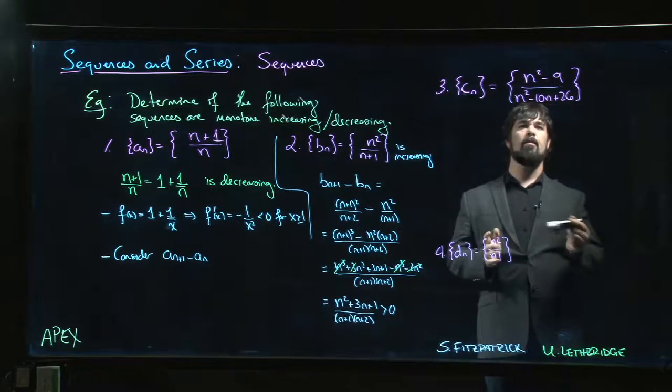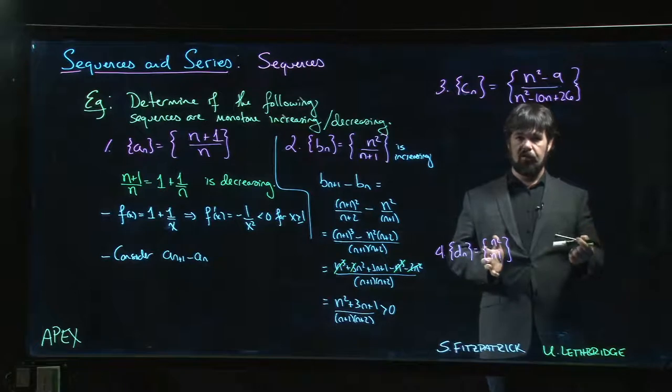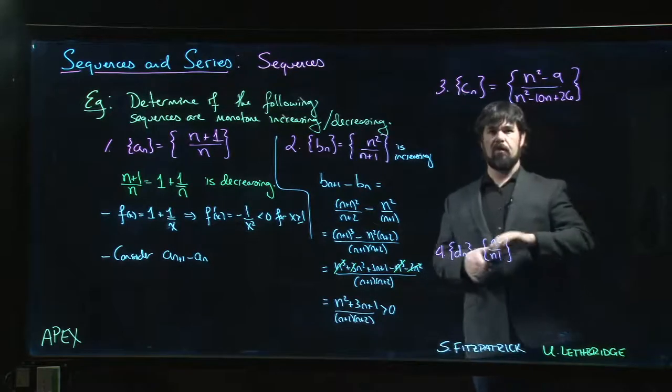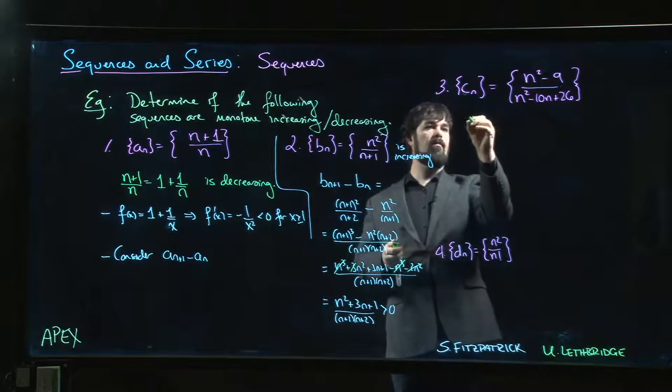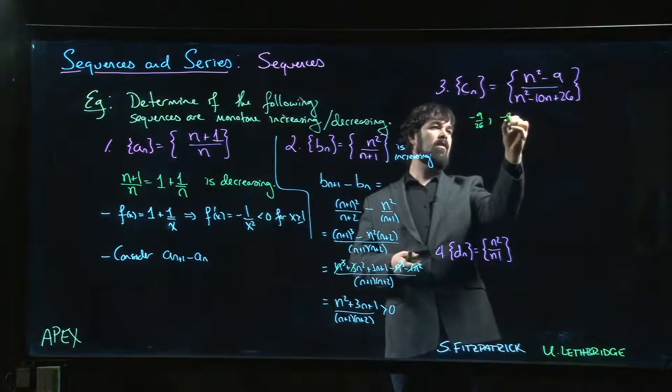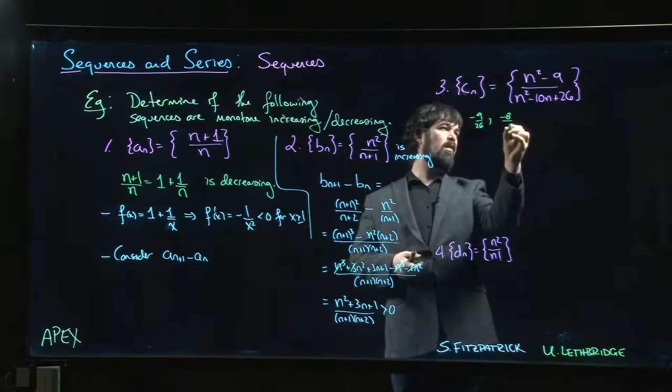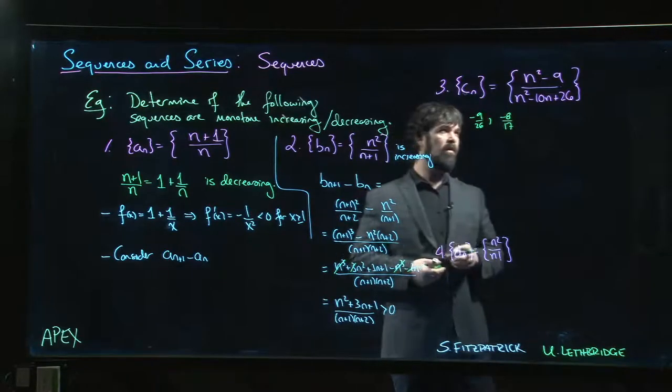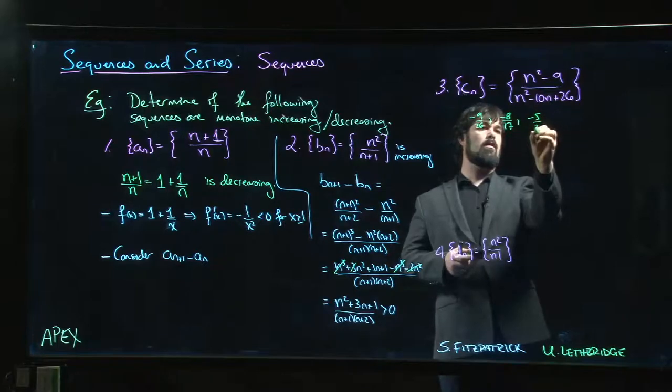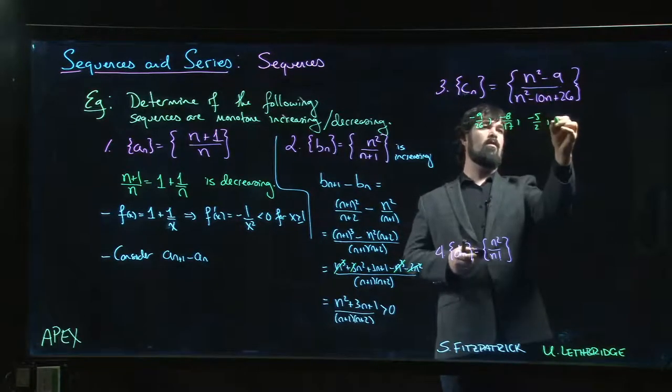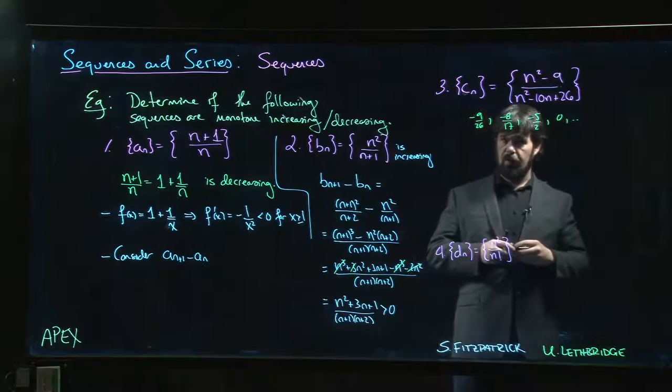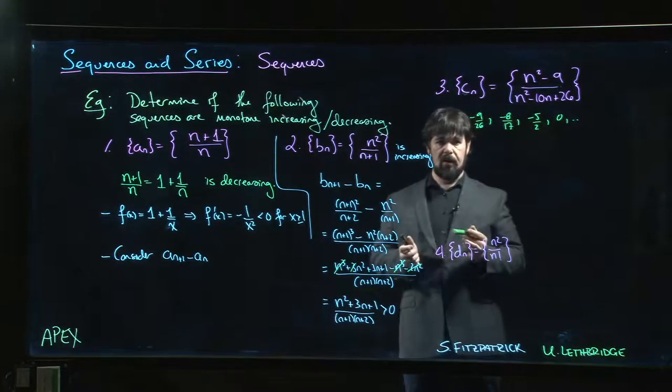So the next one actually, it's going to bounce around on you initially, you might find, if you start plotting some of the values. Textbook does that for you. We can consider if n is equal to 0, what do we get. We sort of start writing out the terms in the sequence. So when n is equal to 0, we have minus 9 over 26. When n is equal to 1, we have minus 8 over 17. n is equal to 2, we have minus 5 over 2. n is equal to 0, we get 0, and so on. We can start plotting these and sort of play around and see where they go. And it's kind of hard to tell looking at those values to figure it out.